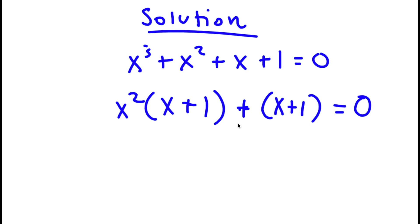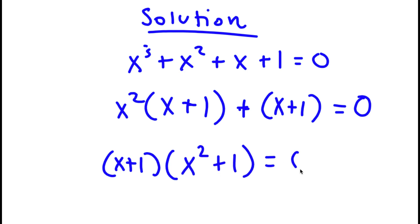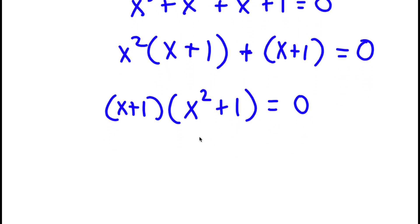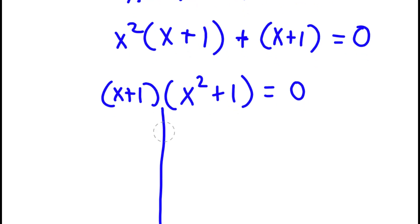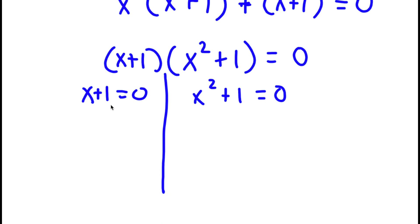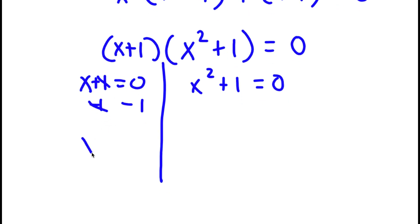Now, if I factor out x plus 1 from this, I get x plus 1 times x squared plus 1 is equal to 0. This gives me two equations: x plus 1 equals 0, and x squared plus 1 equals 0. For x plus 1 equals 0, I simply subtract 1 on both sides — these cancel out — and I'm left with x is equal to negative 1.